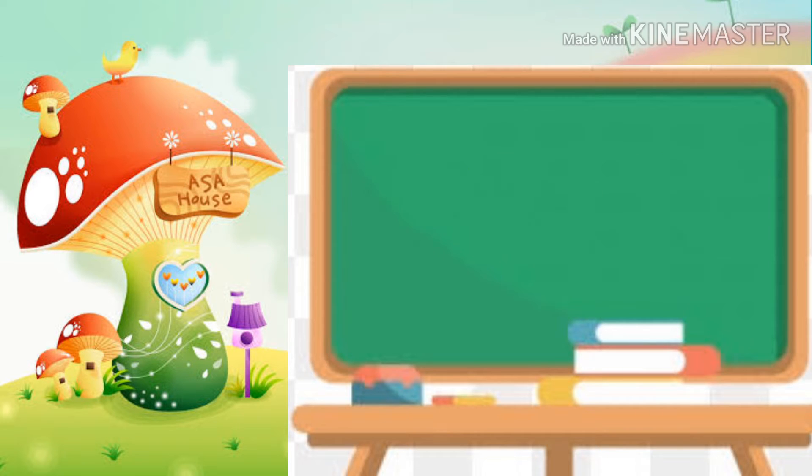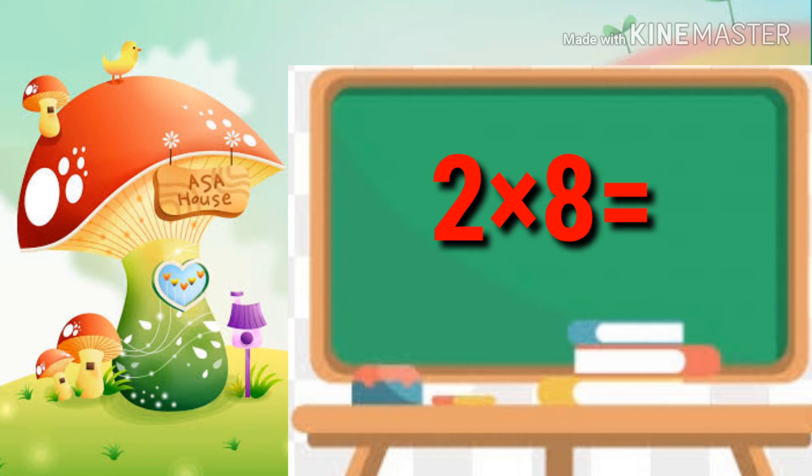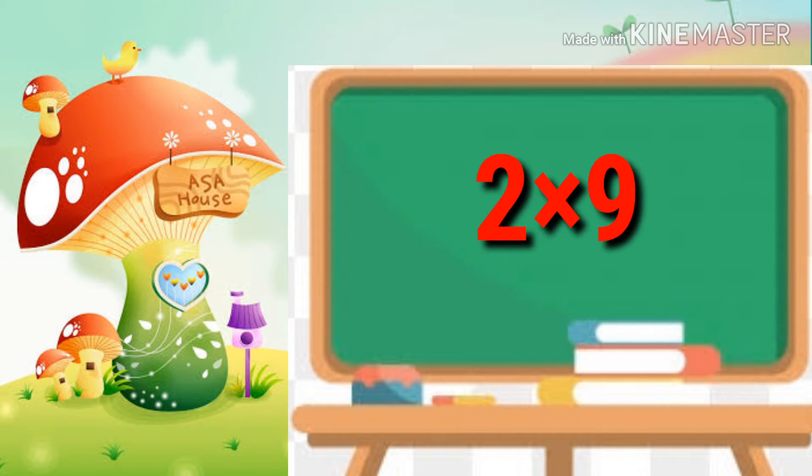2 5's are 10, 2 6's are 12, 2 7's are 14, 2 8's are 16, 2 9's are 18, 2 10's are 20.